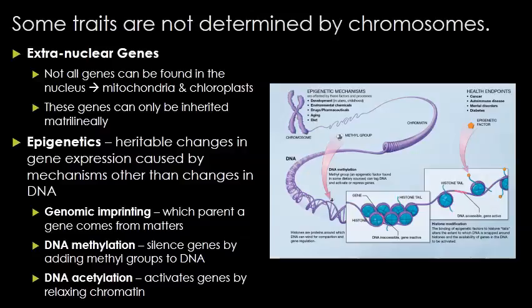Genomic imprinting is one branch, where which parent a gene comes from matters — inheriting gene A from dad versus mom will produce different expression. Another example is methylation versus acetylation. Adding a methyl group to DNA silences the gene by preventing enzymes from reading it. Acetylation does the opposite: acetylating the histones causes them to relax, the chromatin spreads out, and the enzymes can read that section much more easily, so that gene becomes activated.